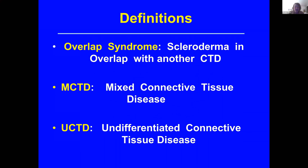First of all, some definitions. An overlap syndrome is scleroderma in which the patient has symptoms and overlap with another connective tissue disease. MCTD refers specifically to a disease called mixed connective tissue disease, and UCTD refers to undifferentiated connective tissue disease.